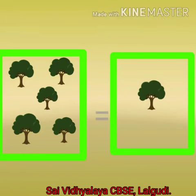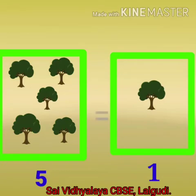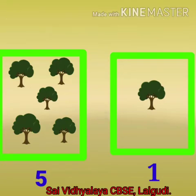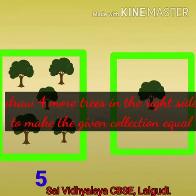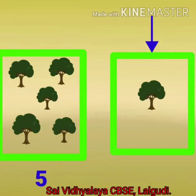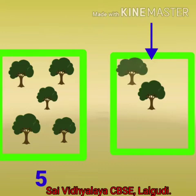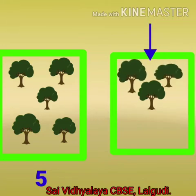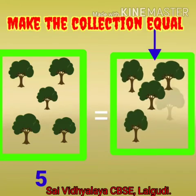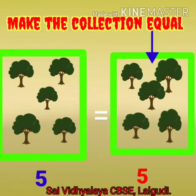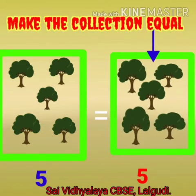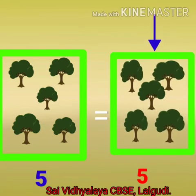Third example. Here we have five trees in the left side and one tree in the right side. Draw four more trees to make the collection equal. Now we have five trees on both the sides.